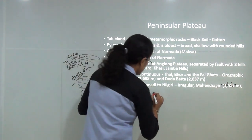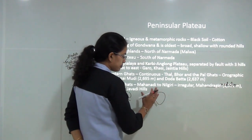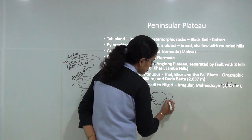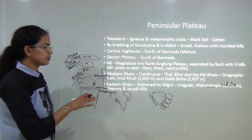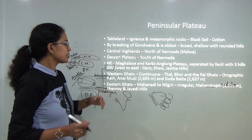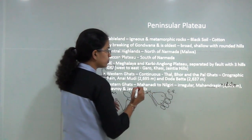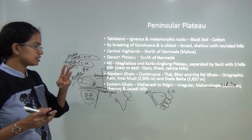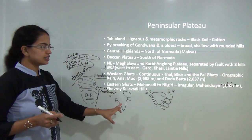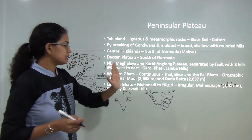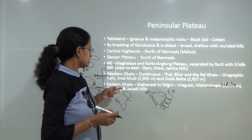Beyond the peninsular region you have the Western Ghats and the Eastern Ghats. Western Ghats are more continuous and narrower, while the Eastern Ghats are much broader and discontinuous — because rivers like Mahanadi, Krishna, and Godavari form deltas there. There are three famous passes in the Western Ghats: Thalghat, Borghat, and Palghat. Common mountain peaks in the Western Ghats are Anamudi and Doddabetta. The Eastern Ghats' highest point is Mahendragiri hill, with other common hills being Chevroi and Jawadi.